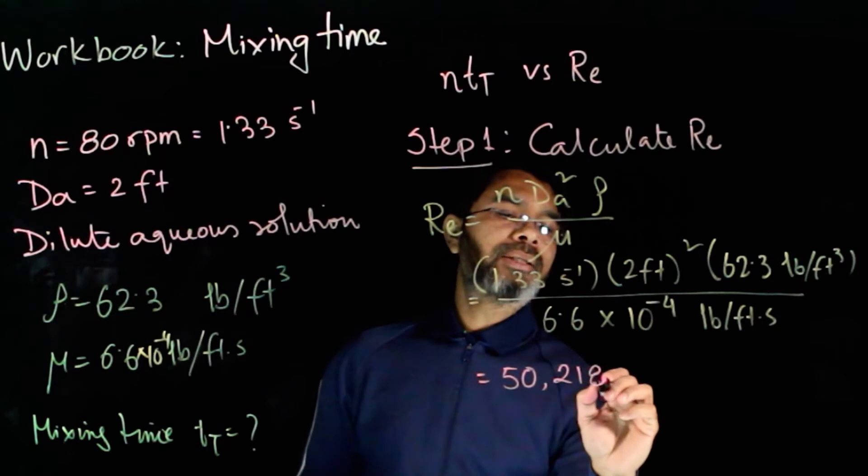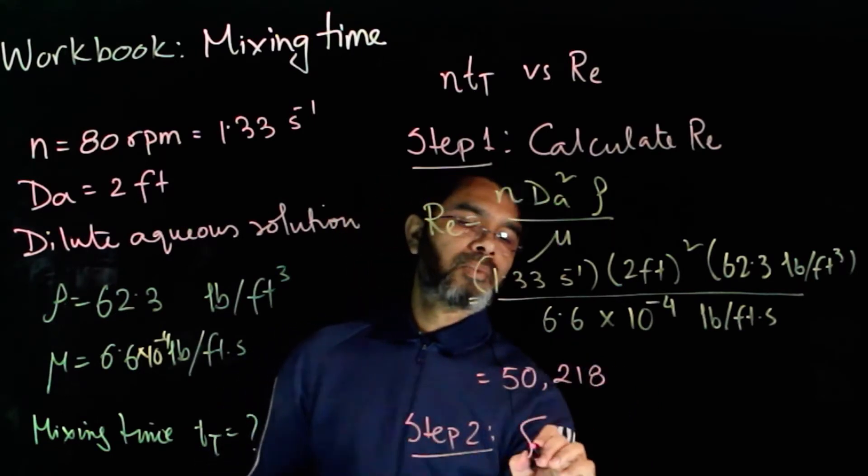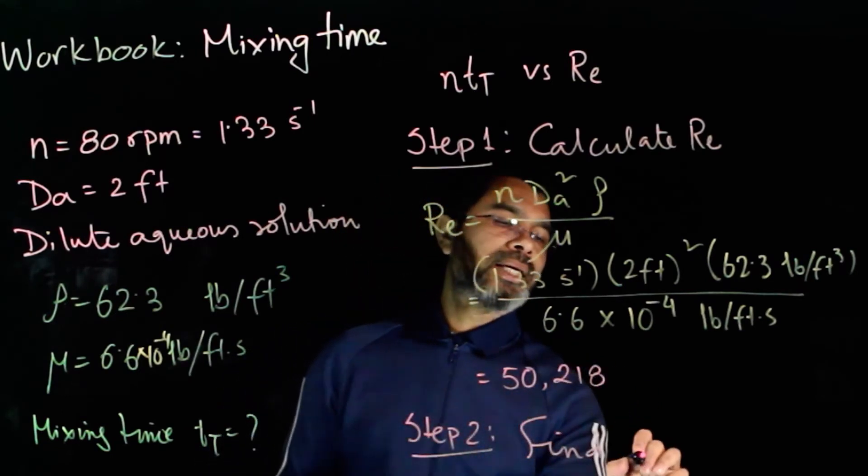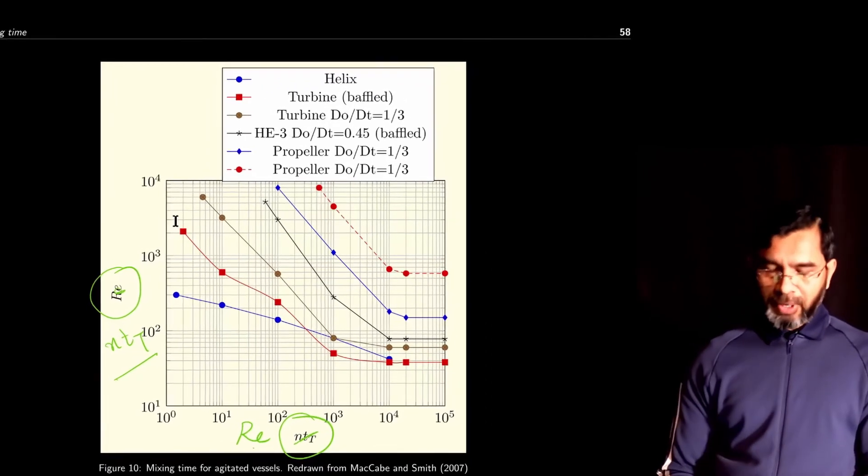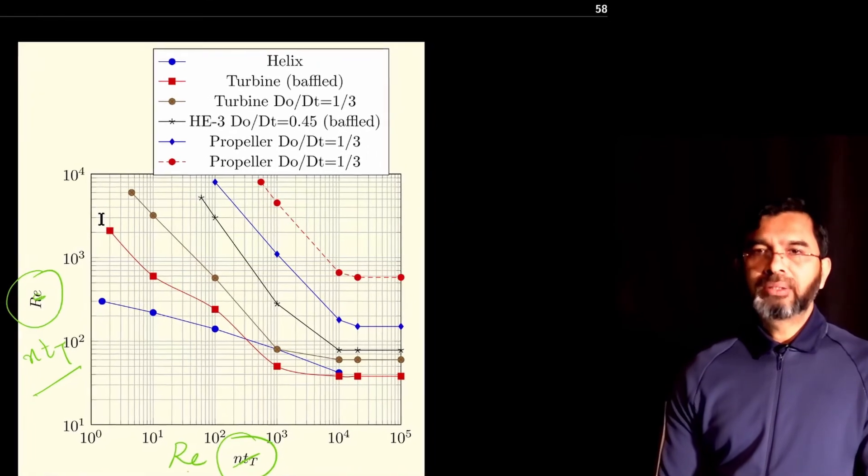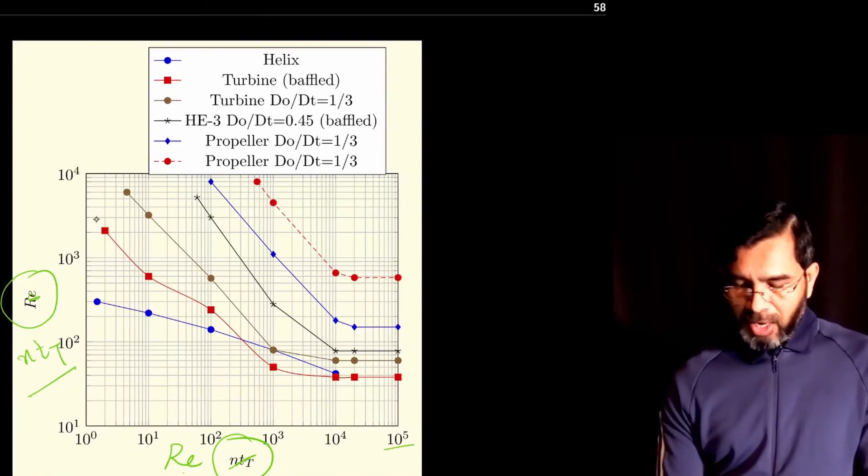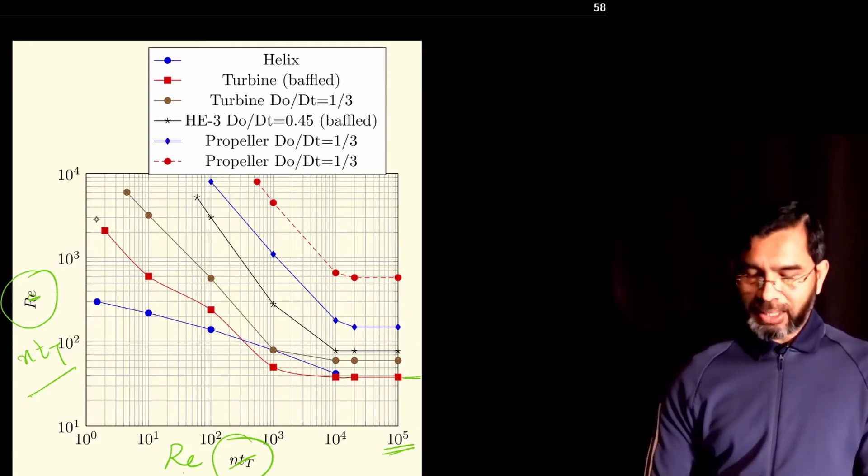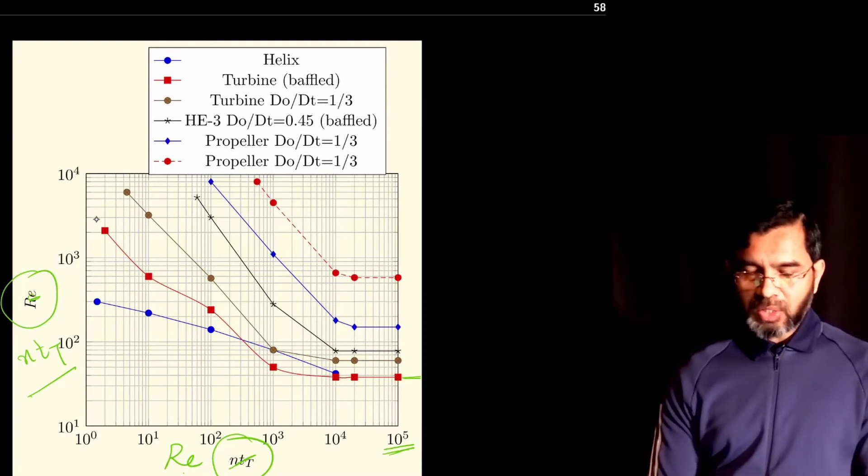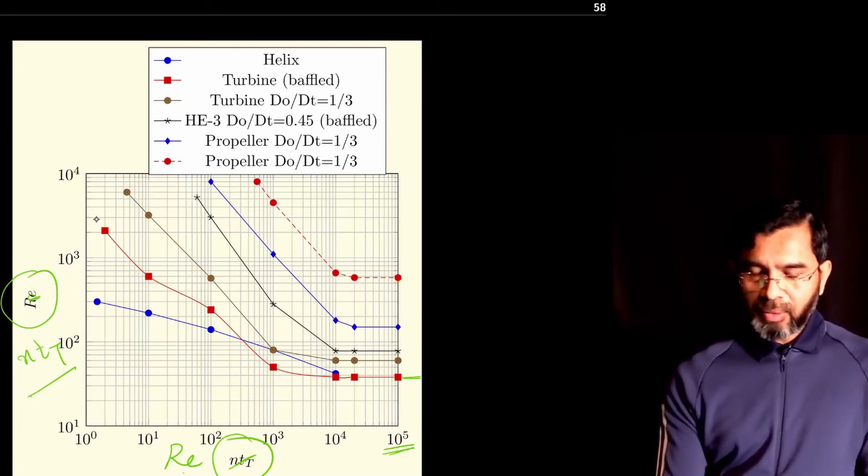Now step 2 is to find nTt. For this case, we have seen the value of Reynolds number to be 50,000. The curves flatten out, so whenever you get a value higher than this, you can use the same value. For this case, we'll use the turbine with D/Dt is one-third.